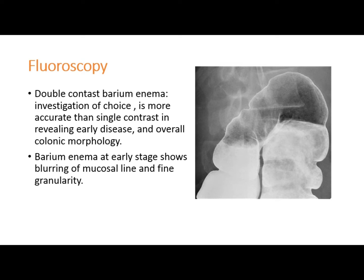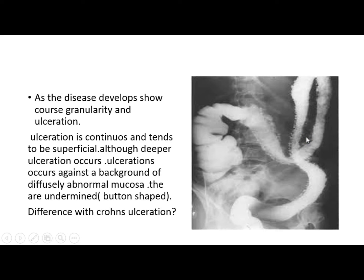Barium enema at the early stage shows blurring of the mucosal line and fine granularity on fluoroscopy. Double-contrast barium enema is the investigation of choice; it is more accurate than single contrast in revealing early disease and overall colonic morphology. As the disease develops, coarse granularity and ulceration appear; the ulcers are button-shaped because they are undermined.